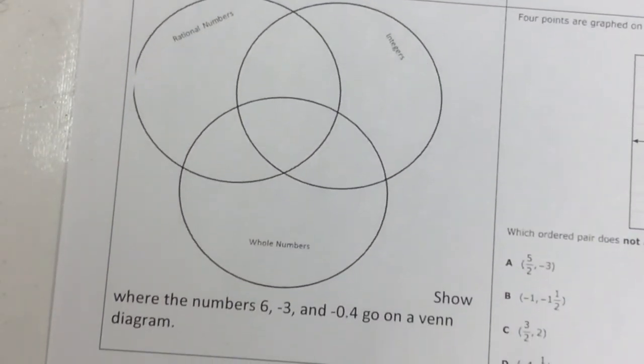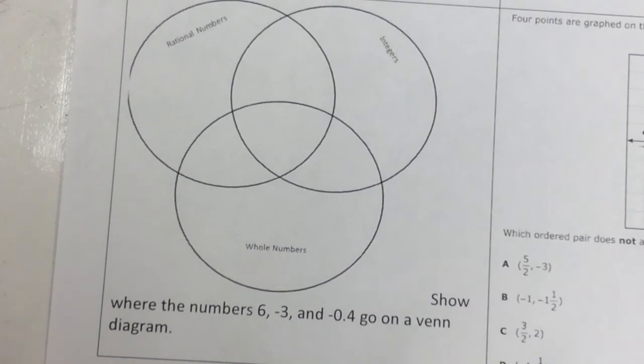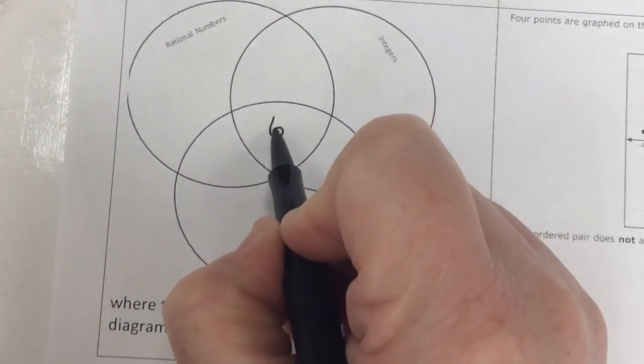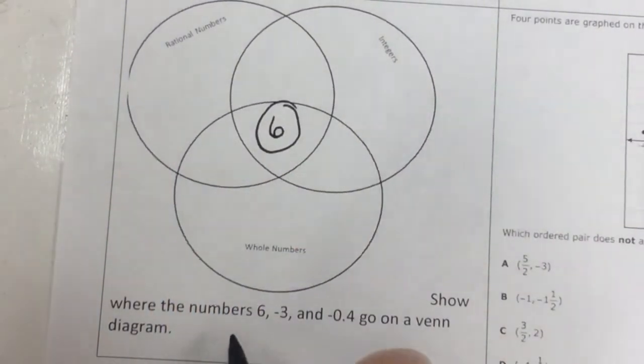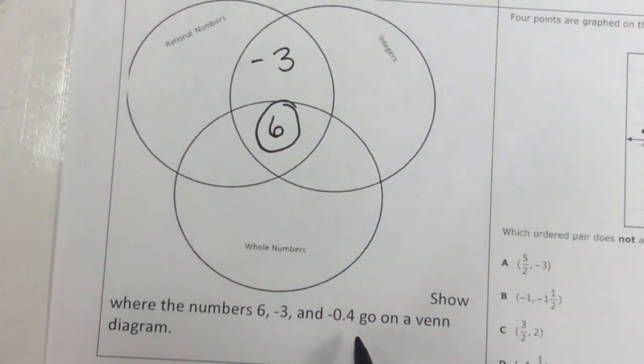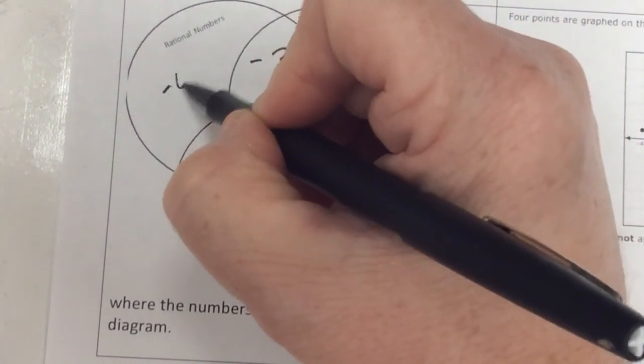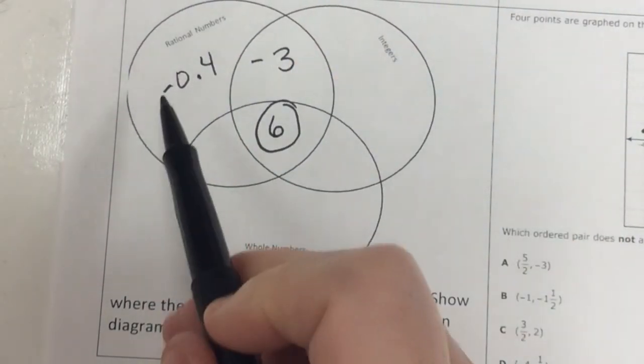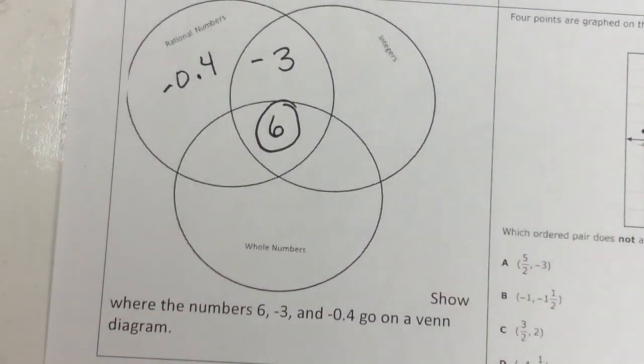Where do the numbers 6, negative 3, and negative 4/10 go on this Venn diagram? Well, 6 is a whole number and an integer and a rational number. So it's going to go right smack in the center. Negative 3 is an integer and a rational number. But it's not a whole number because it's negative. So negative 3 would go here. This is negative 4/10. It's not one of those counting numbers we would see on a number line. So it's only a rational number. Some people are getting mixed up because they think that just because it's negative makes it an integer. That's not true.